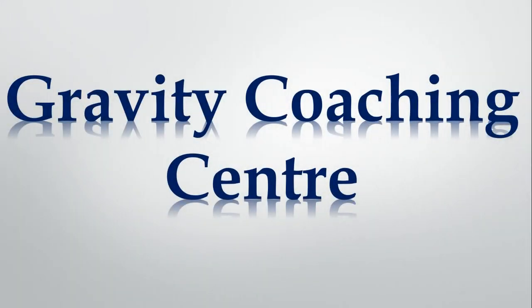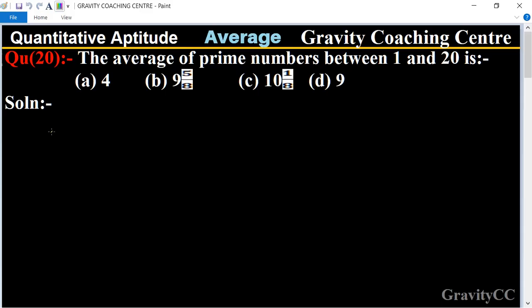Welcome to our channel Gravity Coaching Center, quantitative aptitude chapter average, question number 20. The average of prime numbers between 1 and 20 is - so in this question first of all we write all the prime numbers between 1 and 20.